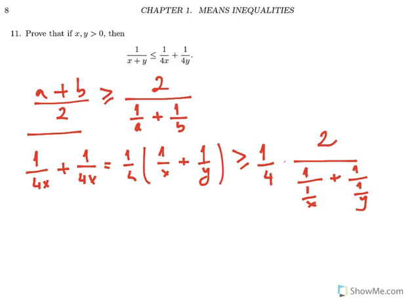Here we have 2 and 4 cancel each other, so we have 1 over 2x plus 2y. Let me write that here: 1 over 2x plus 2y.